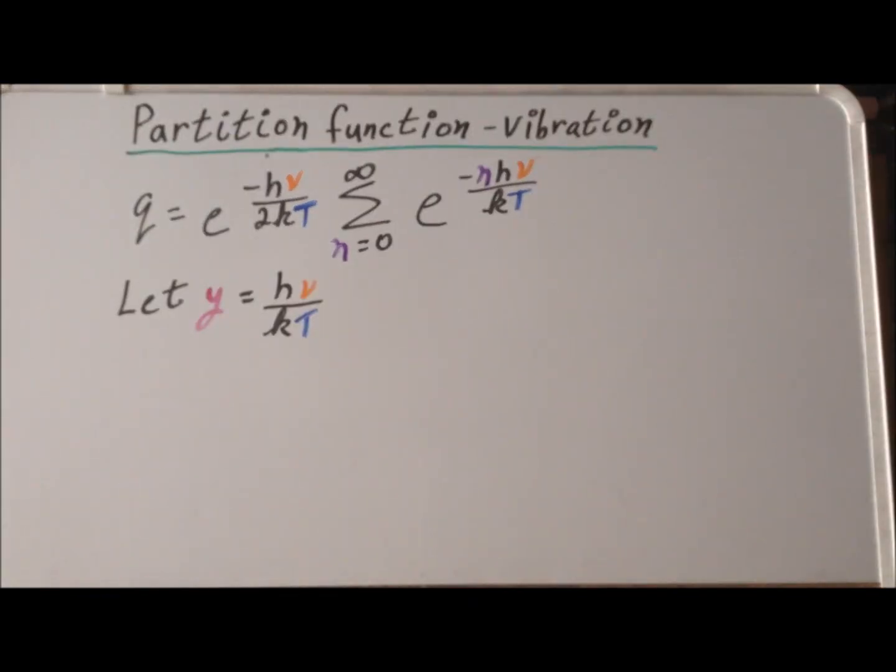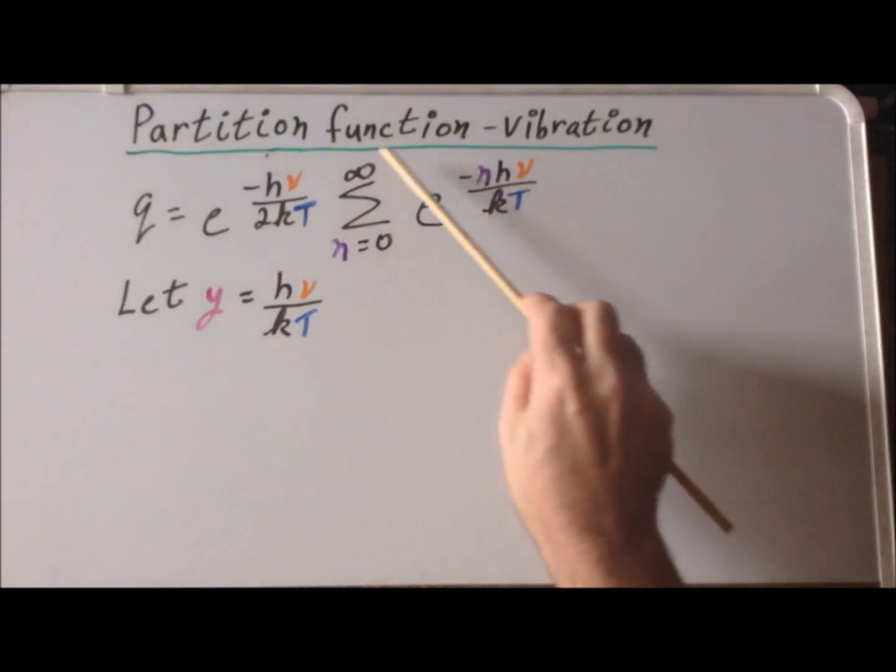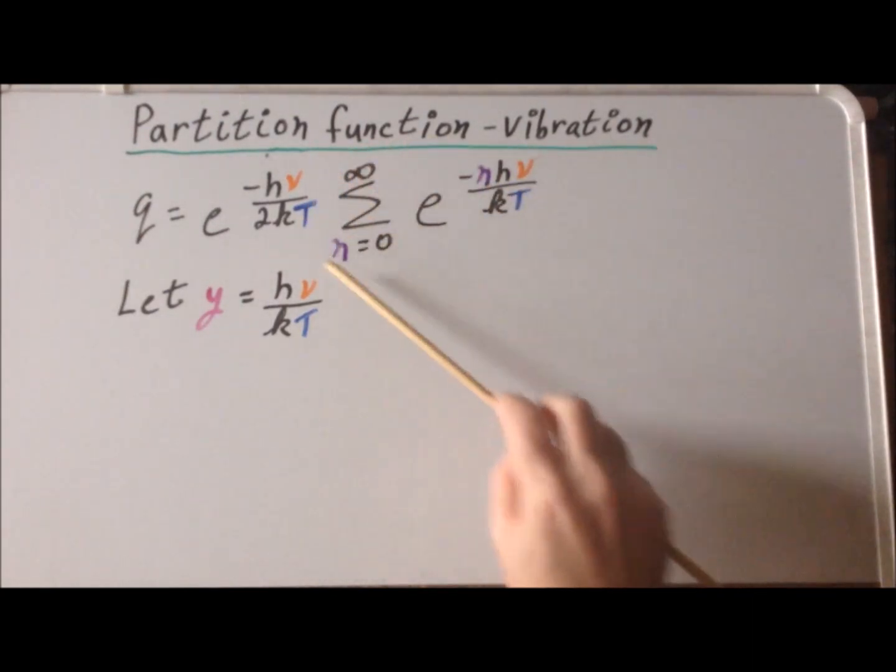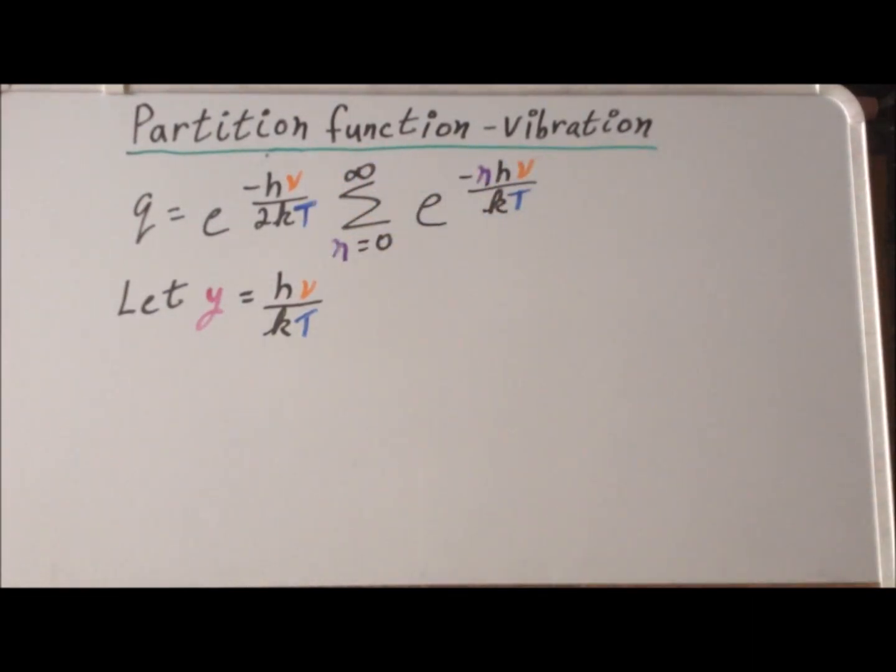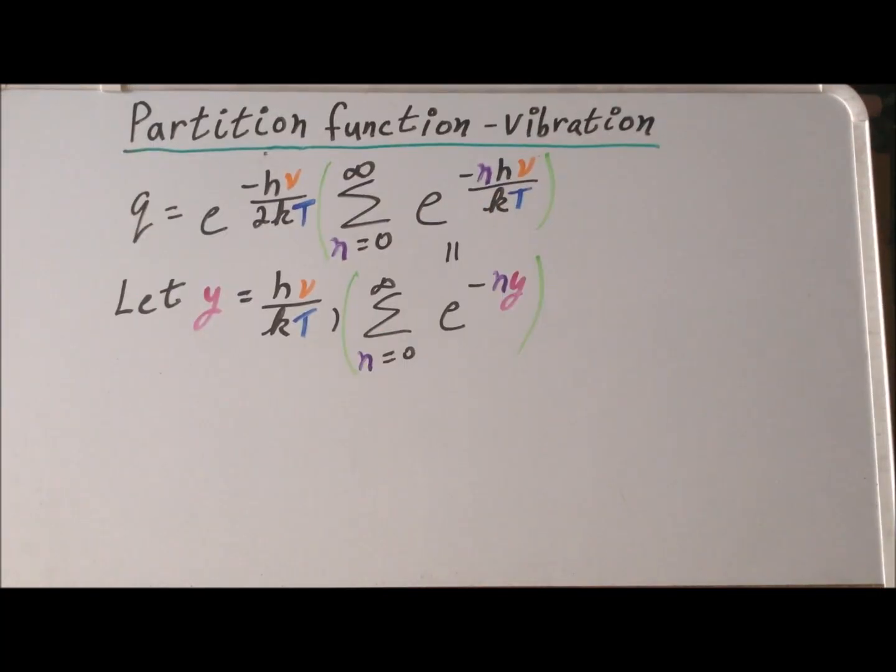Now, to help our derivation, we're going to concentrate on simplifying just the expression that's involved in the summation sign. So this suggests making the substitution for this new variable y, which is equal to h nu divided by kT. Once we do that, that gives us that this summation here of e to the minus n h nu over kT now becomes the summation of e to the minus n times y.